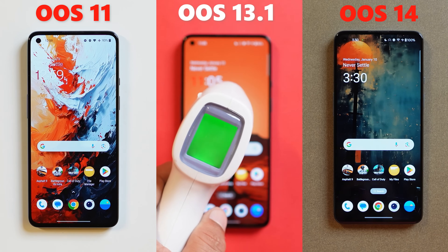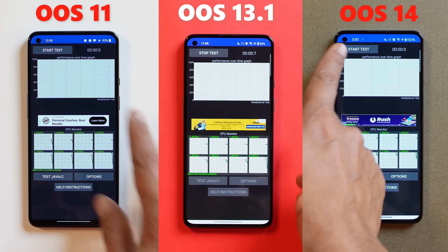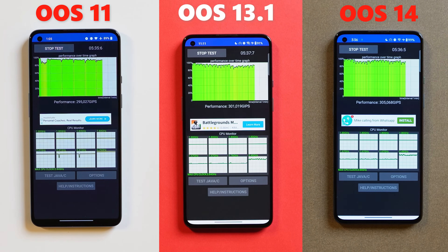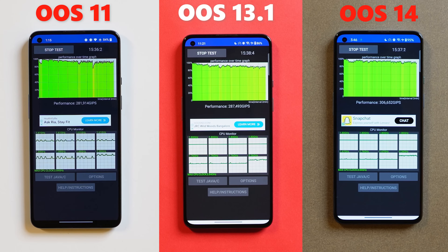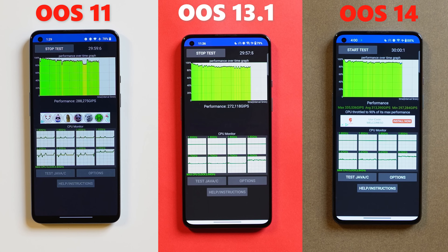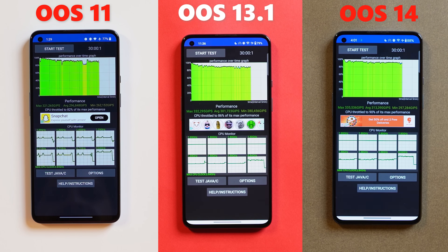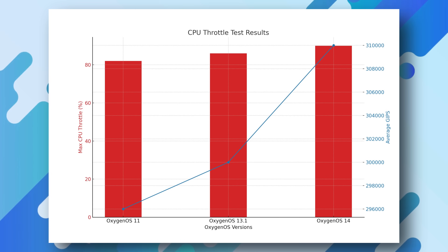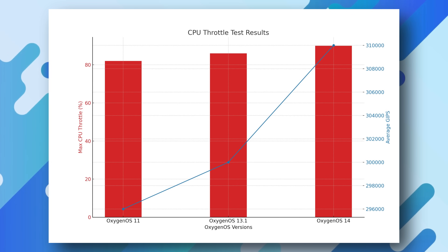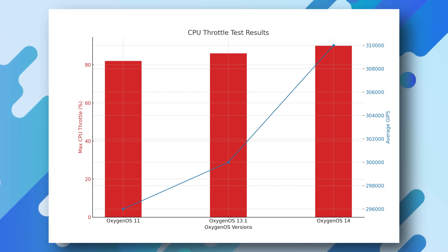Next we moved on to the CPU throttling test, which ran 100 threads for up to 30 minutes. On OxygenOS 11, the CPU throttled to a maximum of 82 percent with average scores above 296,000. On OxygenOS 13.1, the CPU throttled to 86 percent with average scores above 300,000. On OxygenOS 14, the CPU throttled to 90 percent and average scores were above 310,000. In the CPU throttling test, OxygenOS 14 performed the best, with the maximum CPU throttled at 90 percent and the highest average scores.